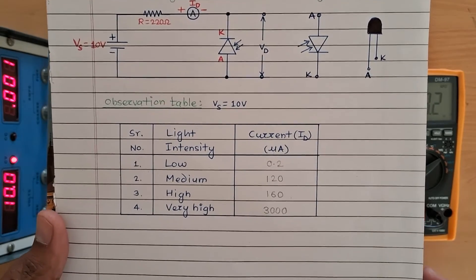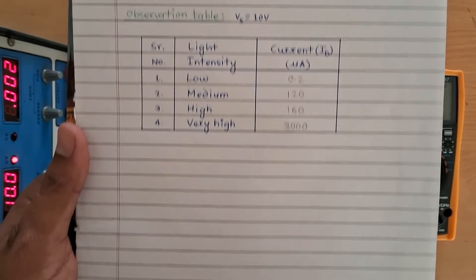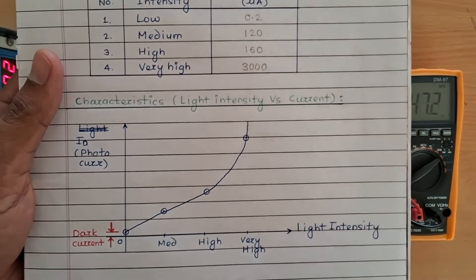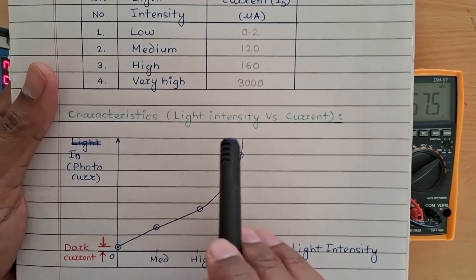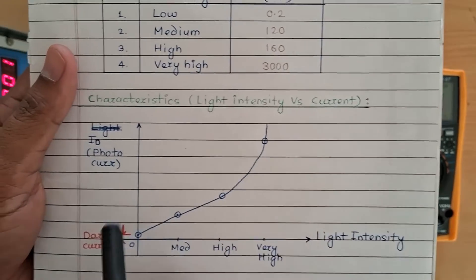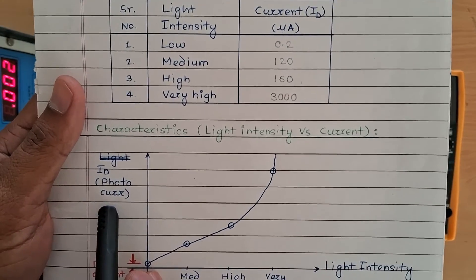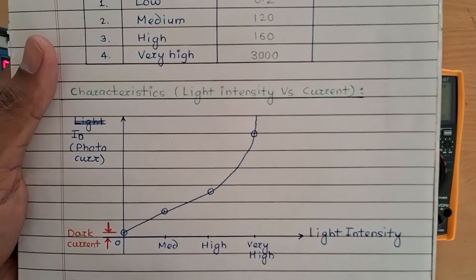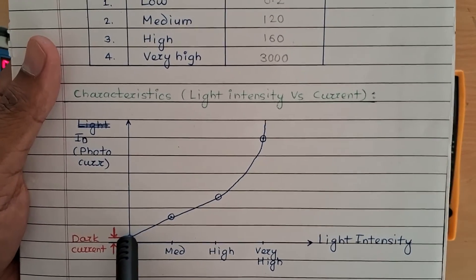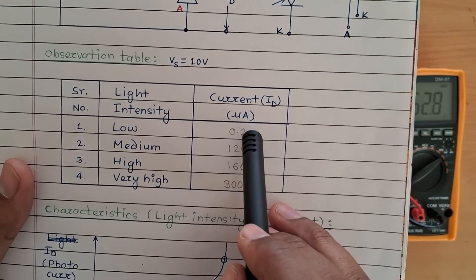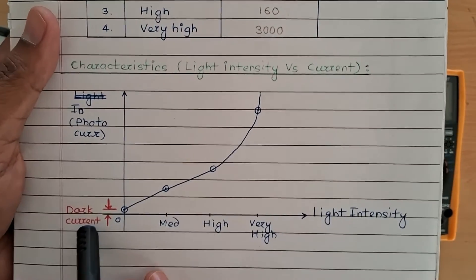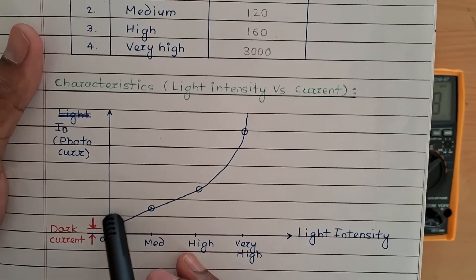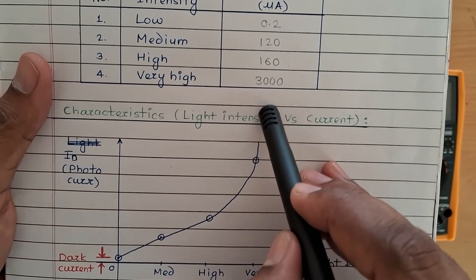Finally we will draw a graph showing the relation between intensity of light and current flowing through the photodiode. On the y-axis we have photo current — the current flowing through the photodiode — and on the x-axis we have light intensity. When light intensity was low, a very small amount of current, the dark current, was flowing. As light intensity goes on increasing, the value of photo current also goes on increasing.